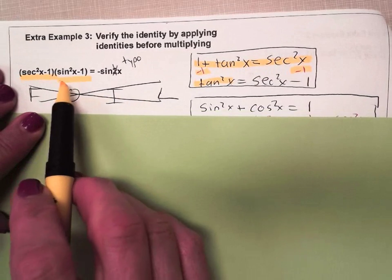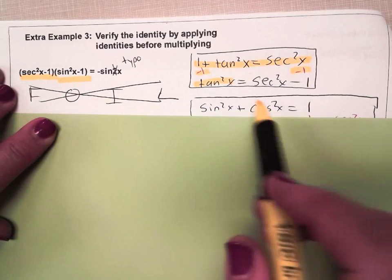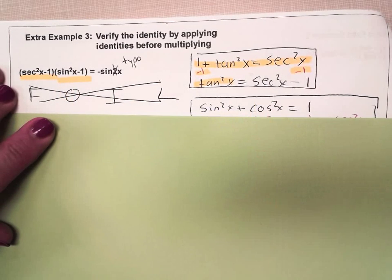For the identity, for the expression in the right side of the parentheses, start with sin²x + cos²x = 1.